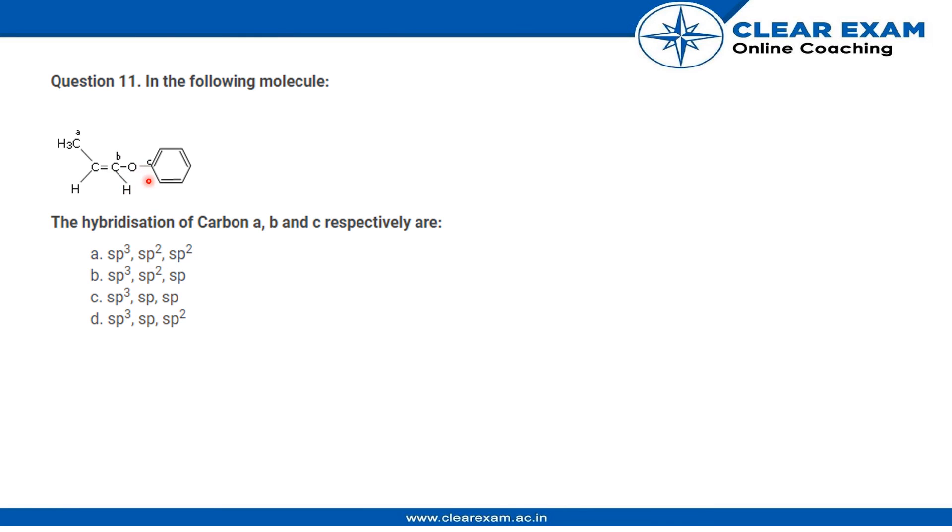For carbon C, again it's a case of double-bonded carbon. There is one bond here, another here, one here, and another hydrogen attached here. There is only one double bond which we can see, and this is the same case as carbon B, which is double-bonded carbon, meaning SP2, option A.